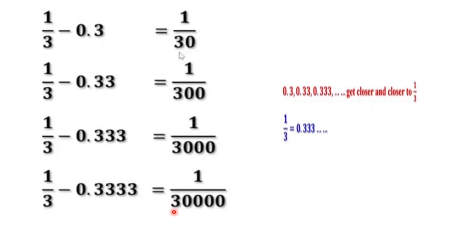So if you want 0.3, 0.33, 0.333 — they are all approximations of 1 by 3. The more decimal places you add, the closer you get to the exact value of 1 by 3.